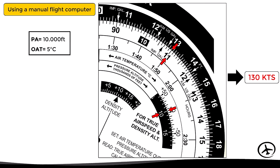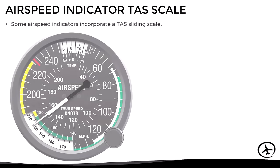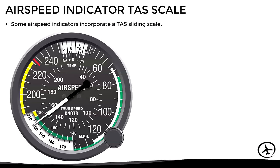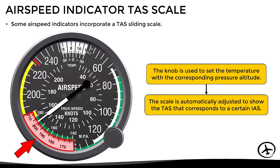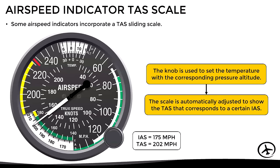There is a third method available while flying: the true airspeed scale incorporated into some airspeed indicators. Using the knob in the bottom right corner, you adjust the current pressure altitude with the outside air temperature on the scale at the top, just as with the flight computer. Once adjusted, the scale below indicates the true airspeed for any given indicated airspeed. For example, an indicated airspeed of 175 mph corresponds to approximately 202 mph of true airspeed on the scale.